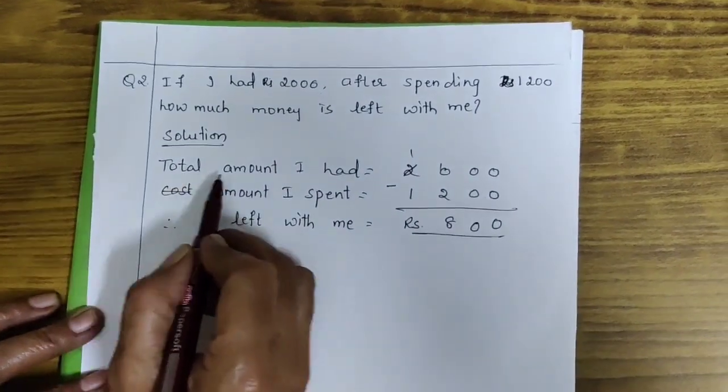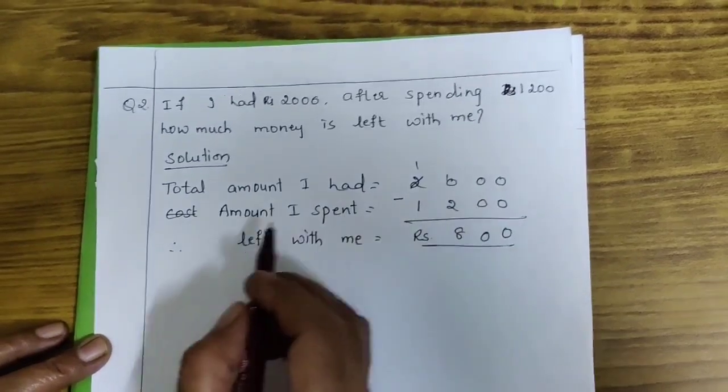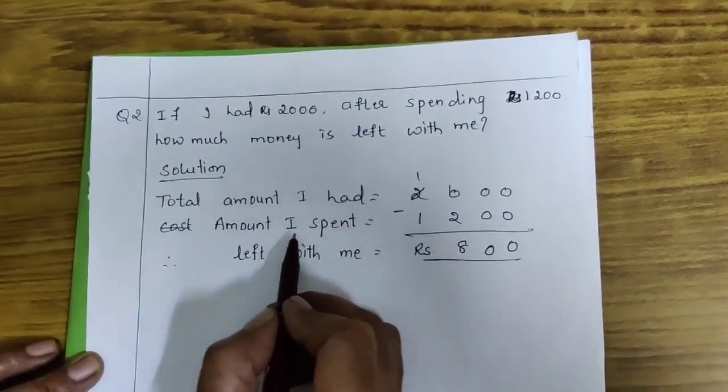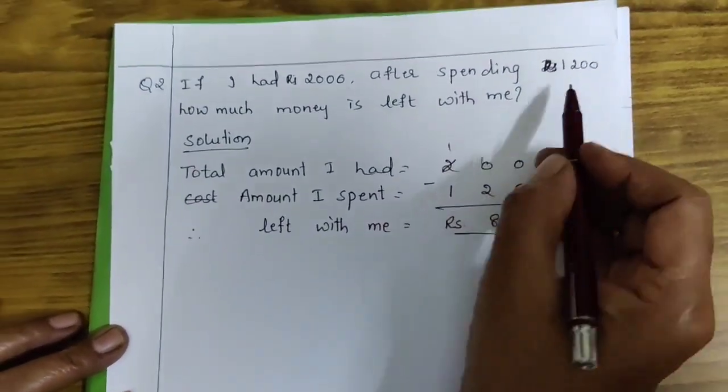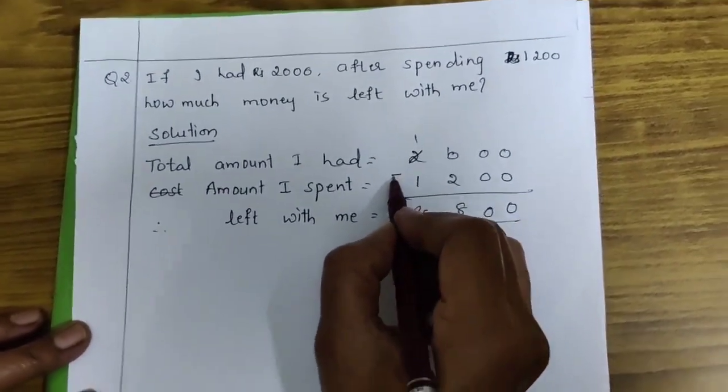Total amount I had how much? 2,000. And amount I spent. How much I spent children? 1,200. So, you have to subtract.